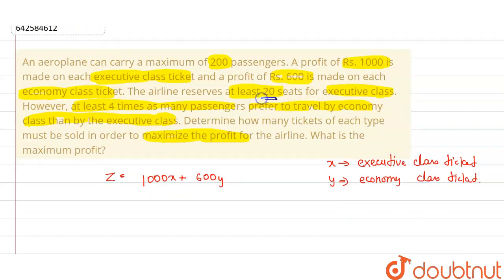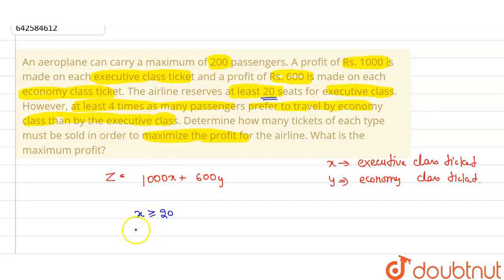The first constraint is that at least 20 seats are reserved for executive class, so x must be greater than or equal to 20. The second constraint is that at least four times as many passengers prefer to travel by economy class than by executive class, written as y is greater than or equal to 4x.